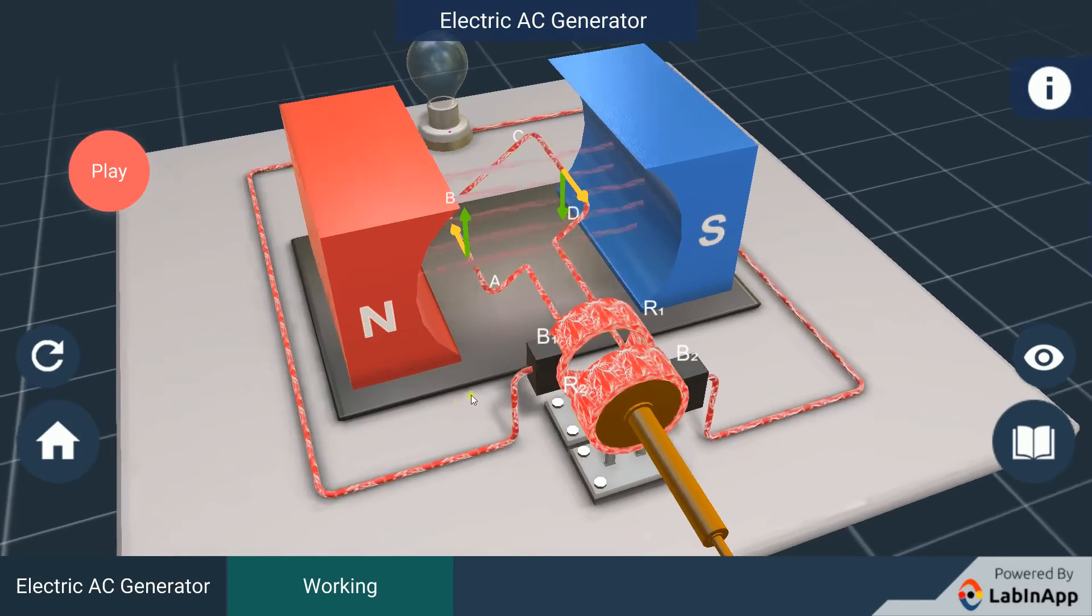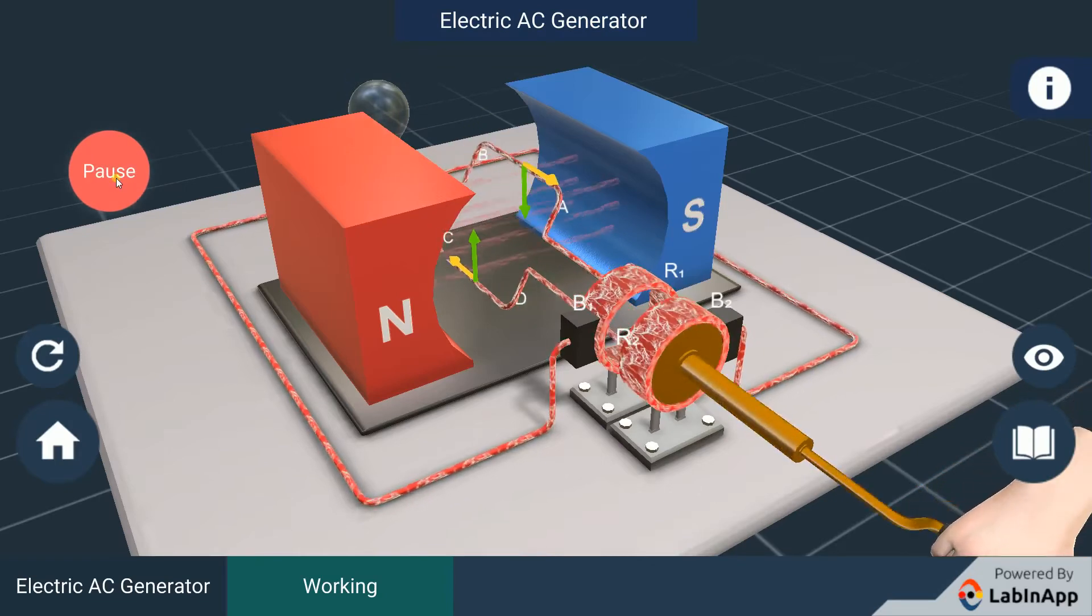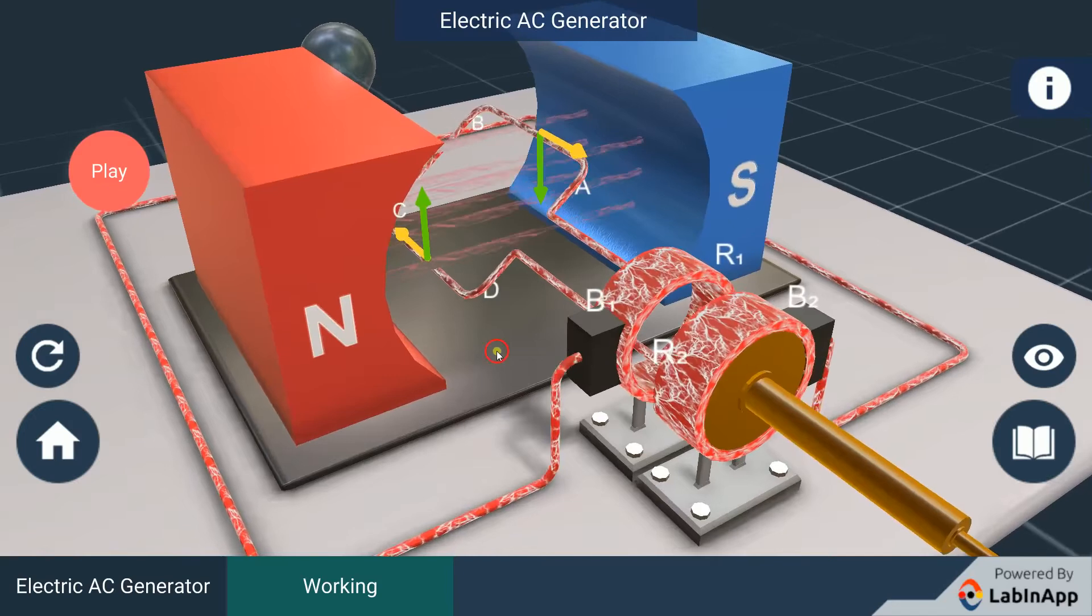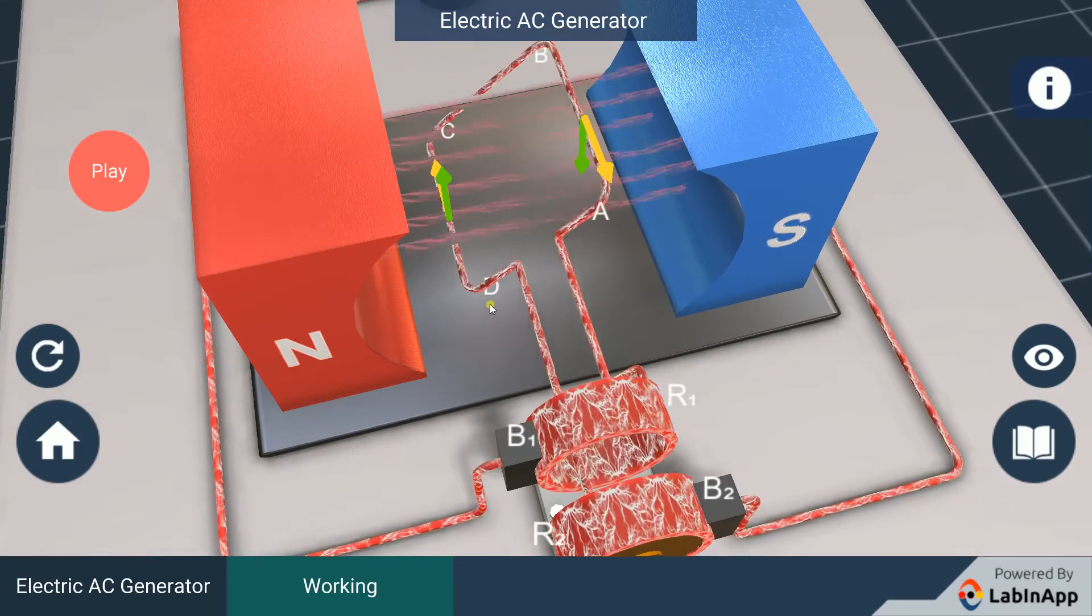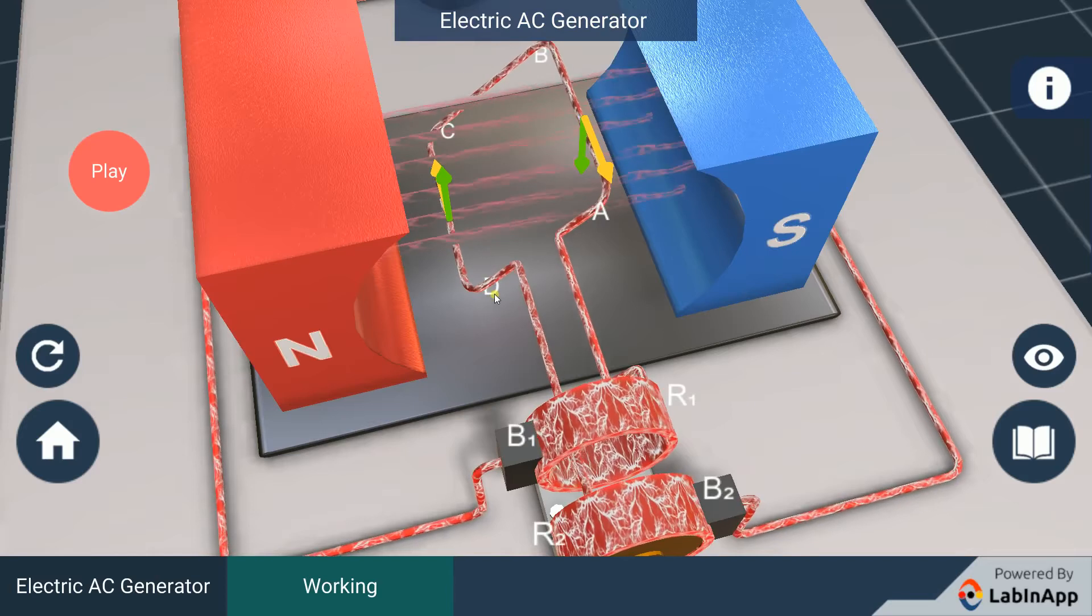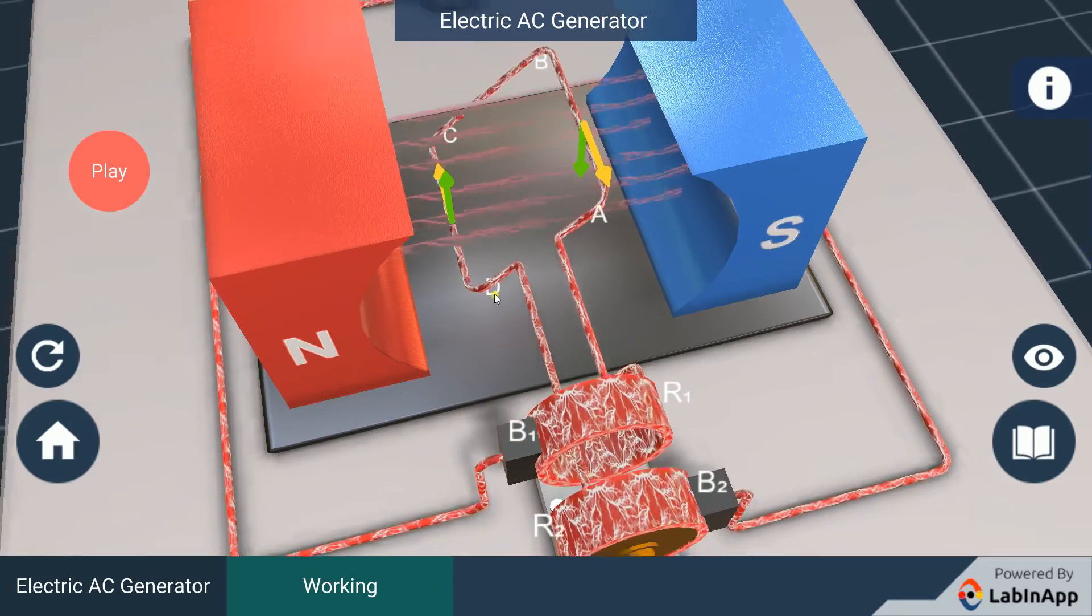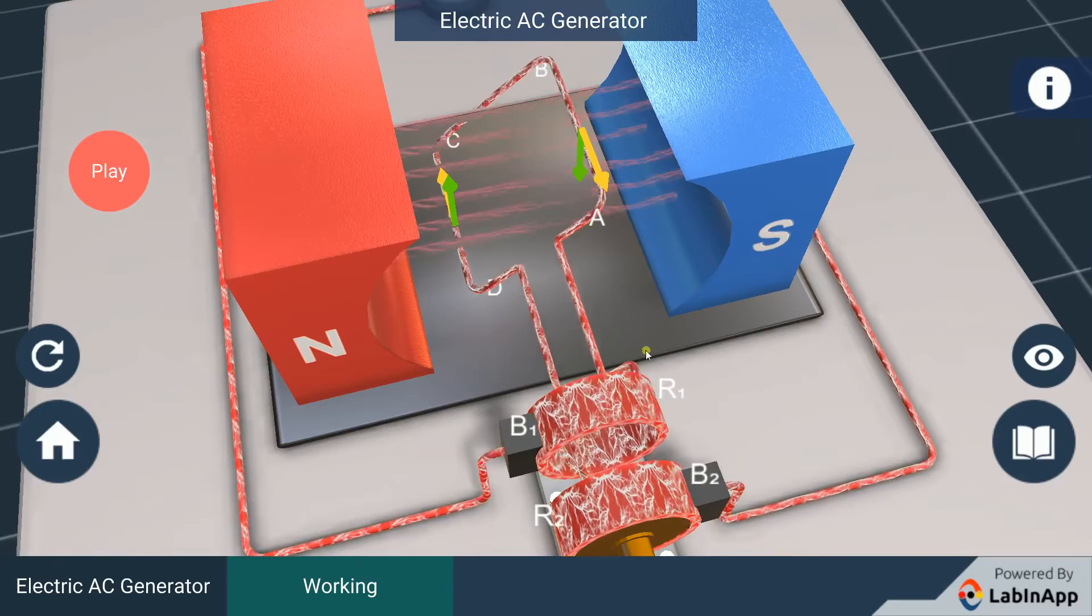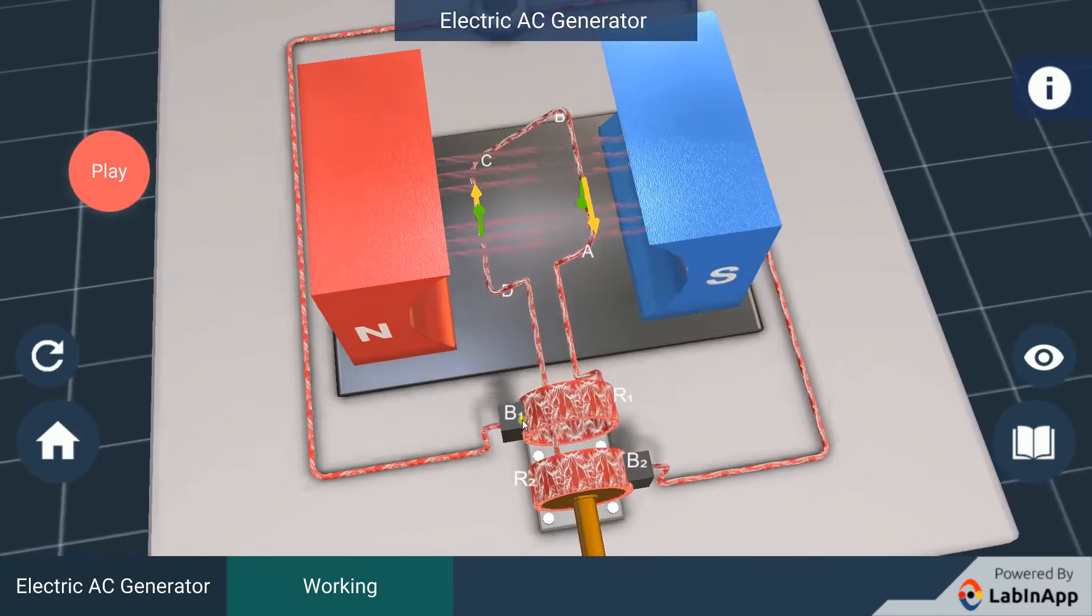After half a rotation, arm CD starts moving up and AB moving down. As a result, the directions of the induced currents in both the arms change, giving rise to the net induced current in the direction DCBA. The current in the external circuit now flows from B1 to B2.